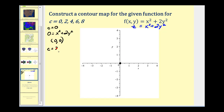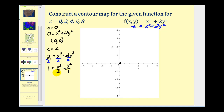Now we'll let c equal two. We have two equals x squared plus two y squared, which is an ellipse. Dividing through by two gives one equals x squared over two plus y squared over one. This is an ellipse centered at the origin with a horizontal major axis, where a squared equals two and b squared equals one. So a is the square root of two, approximately 1.4, and b equals one. We move left and right 1.4 units and up and down one unit to create this level curve when c equals two.